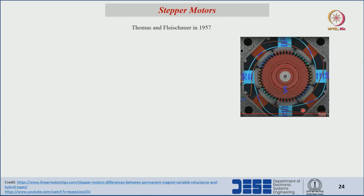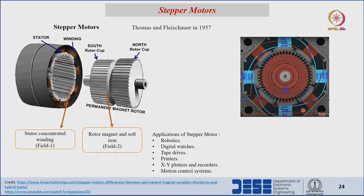The stepper motor is a variable reluctance type motor with concentrated winding at the stator side. The rotor side has soft iron or, in hybrid motors, a permanent magnet on top of an iron piece with small teeth to achieve smaller angular steps. If a larger step value or fewer poles are needed, a soft iron piece alone can be used. Opposite poles attract and same poles repel; the angle of rotation depends on the number of teeth at the rotor side. Applications of stepper motors include robotics, digital watches, printers, X-Y plotters, and motion control systems.